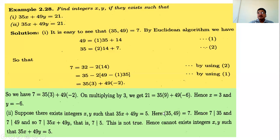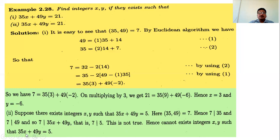Hence we cannot find integers x and y such that 35x + 49y = 5. This is because 7 divides 35 and 7 divides 49, and therefore by divisibility properties 7 divides 35x + 49y. If 35x + 49y = 5, then 7 divides 5 — a contradiction. Therefore no such x and y exist.